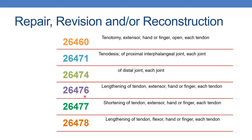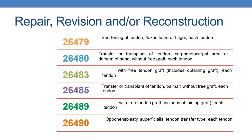Next is 26476: lengthening of tendon, extensor, hand or finger, each tendon. For shortening of tendon, extensor, hand or finger, each tendon, it is reported with 26477. And for lengthening of tendon, flexor, it is given with 26478. Whereas shortening of tendon, flexor, it is given by 26479.